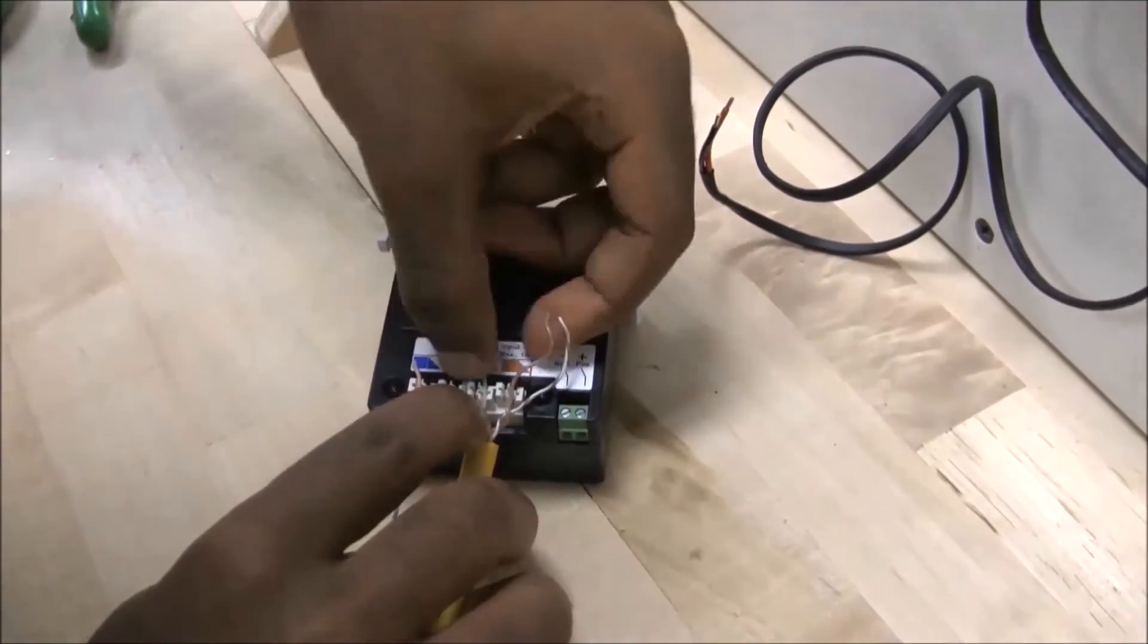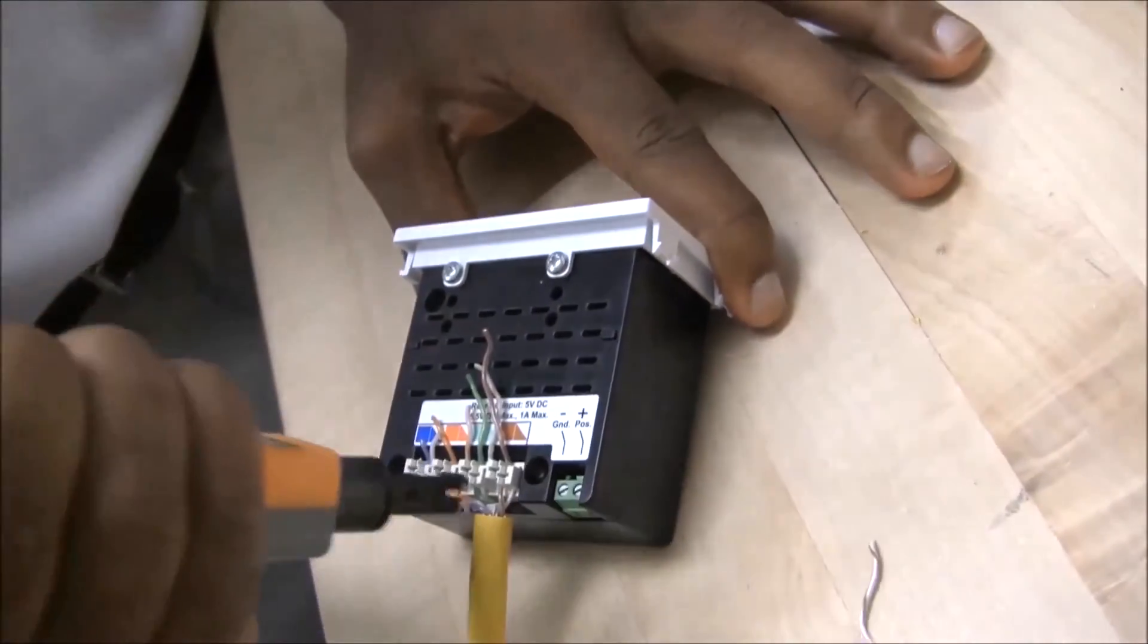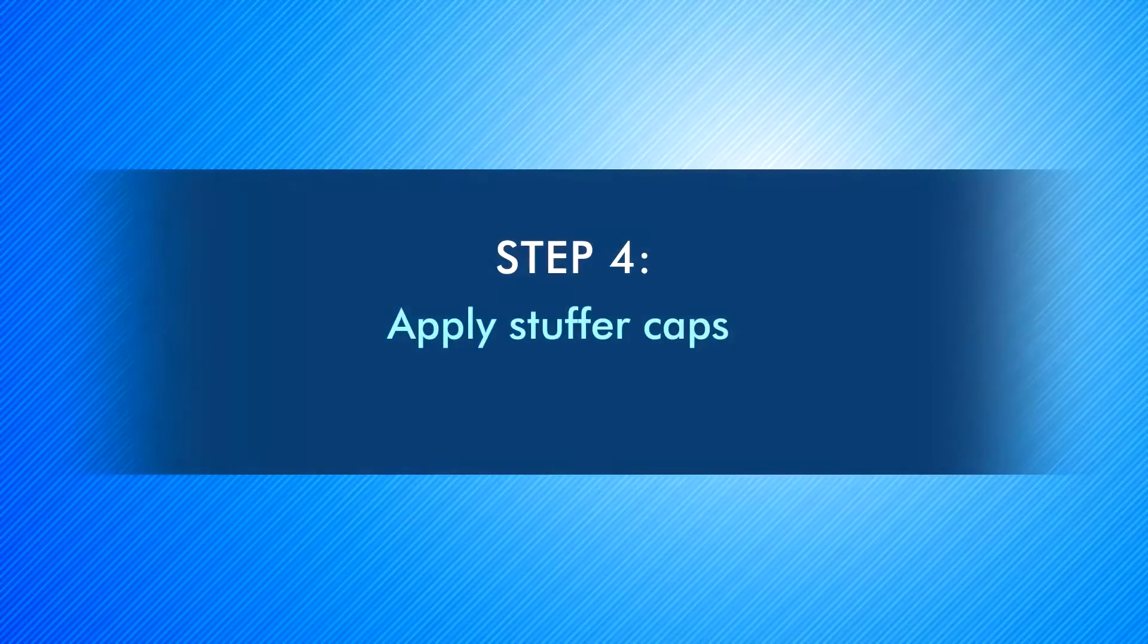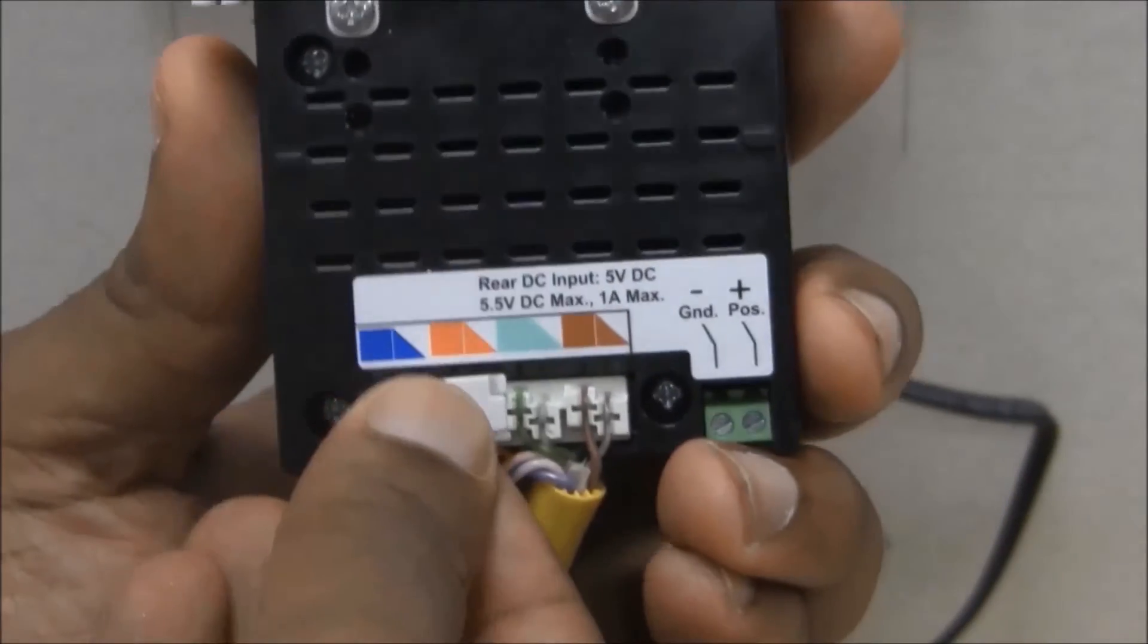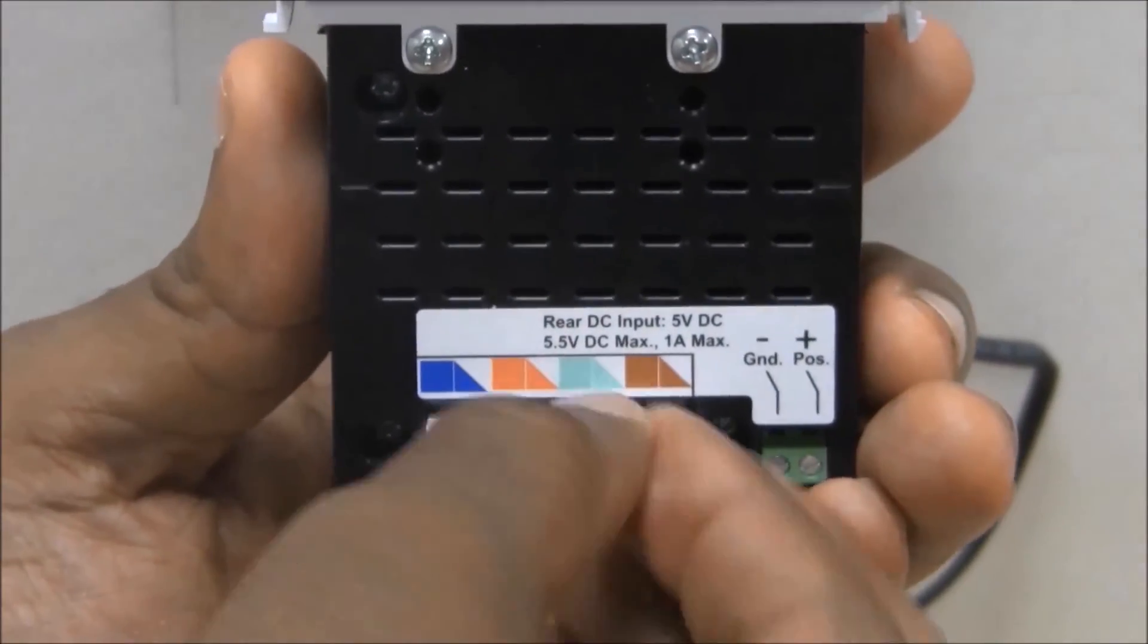Terminate wires with a 110 punch-down tool. Make sure to orient the cut side toward the free end of the wires. Inspect to ensure wires are fully seated and not nicked or damaged. Apply provided stuffer caps to provide additional strain relief.